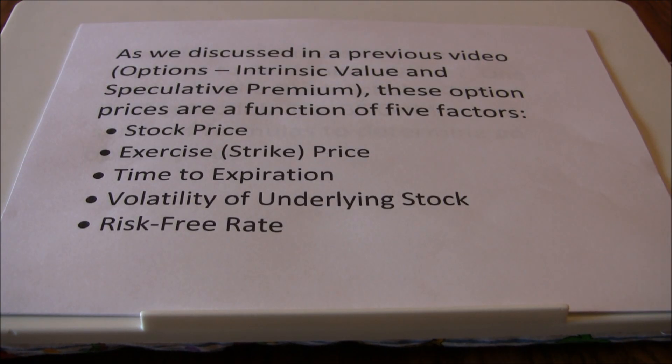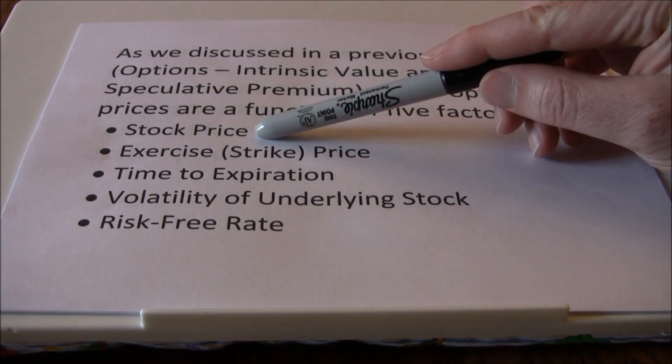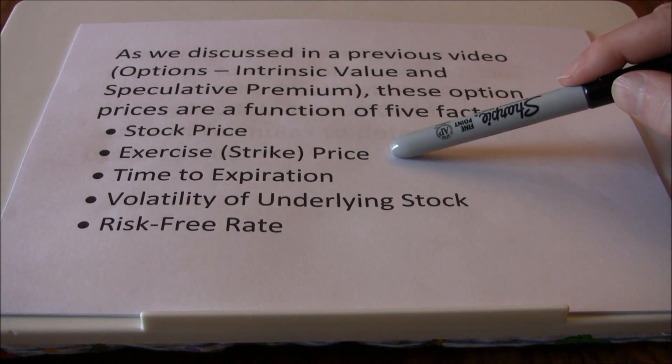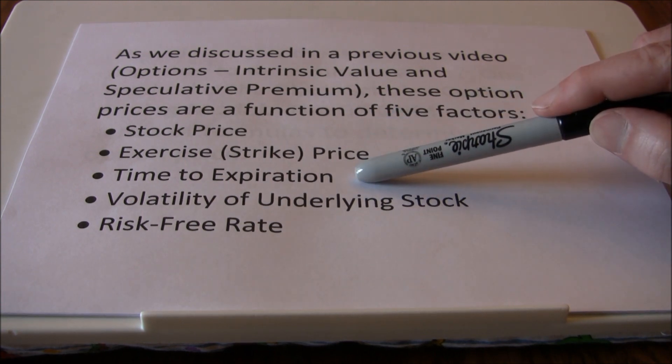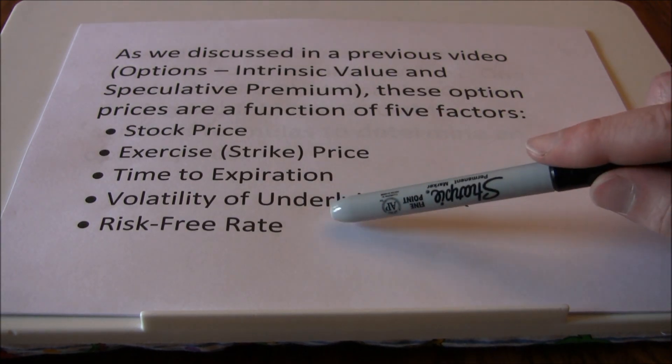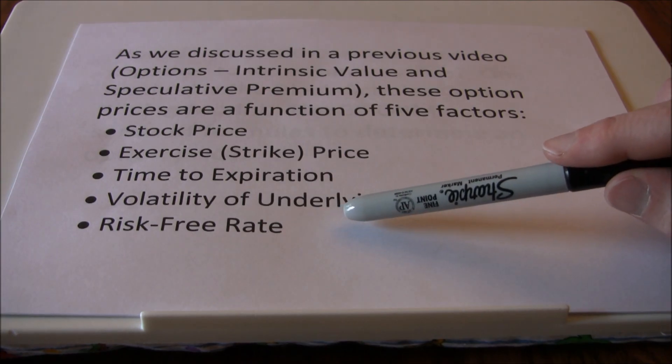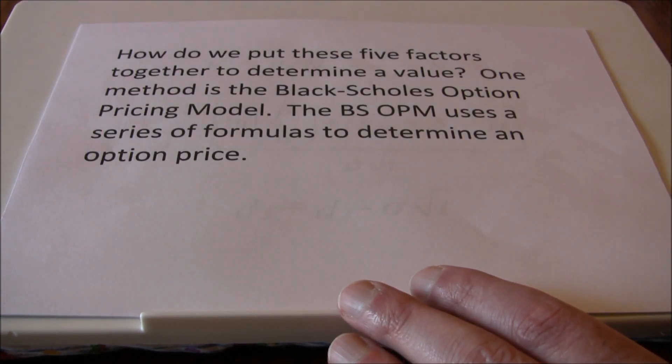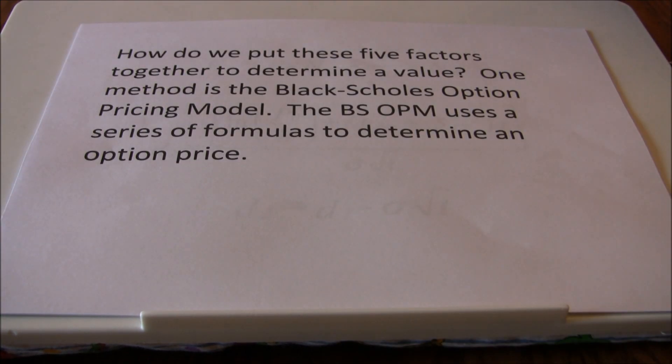Now as we discussed in a previous video when we talked about intrinsic value and speculative premium, option prices are a function of five factors: the underlying stock price, the exercise or strike price for that option, the time to expiration, the volatility of the underlying stock, and the risk-free rate of interest. And those are the five factors that are going to go into the Black-Scholes option pricing model. So we're going to take all five of those factors and use the Black-Scholes option pricing model to figure out what the option is worth.